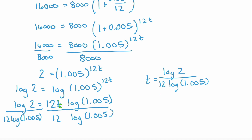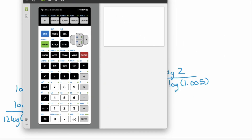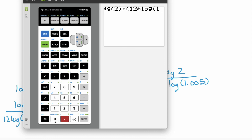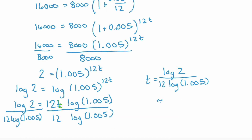We need to find the time in years rounded to one decimal place. I don't know the log of 2 or the log of 1.005 off the top of my head, so we're going to use a calculator. Enter log of 2, then divide — I like to use parentheses to make sure I'm dividing by 12 times log of 1.005. Close the parentheses and hit enter. We get 11.58, which rounded to one decimal place is approximately 11.6. So it will take 11.6 years for $8,000 to double at a 6% interest rate.